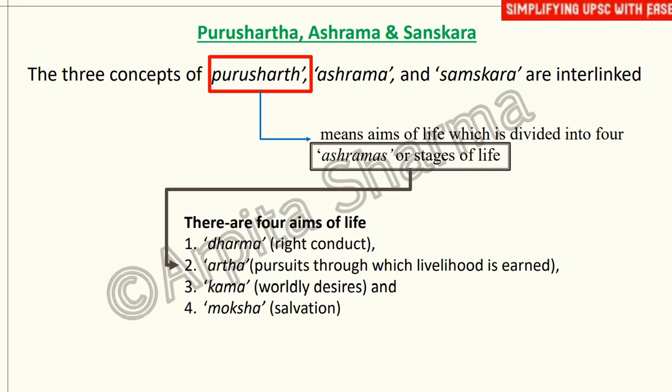When we talk about the three concepts — Purushartha, Ashrama, and Sanskara — these three are interlinked and related to the Varna system. Purushartha means 'aims of life' — the goals in your life for which you are going to strive hard.